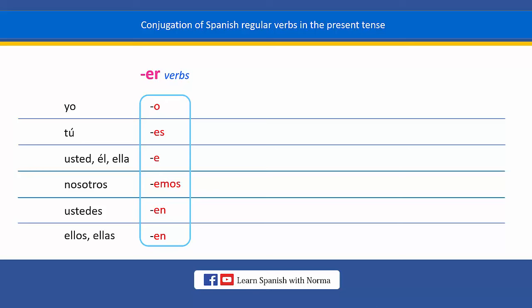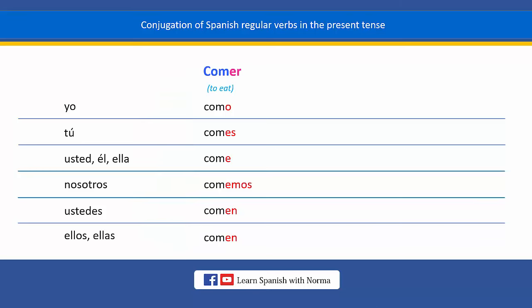Let's conjugate one verb that belongs to this group. The verb "to eat" in Spanish is comer. This is the infinitive form of the verb "to eat" in Spanish. For conjugating this Spanish verb, comer, just remove the last two letters — the ER ending. And then, add the corresponding endings that match each subject pronoun. So, this is the conjugation of the Spanish verb comer in the present tense.